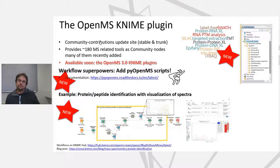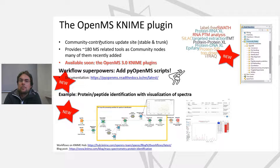In total we make about 180 tools available in the OpenMS KNIME plugin — some with larger tasks, some with smaller ones. It's available as a community contribution, both stable and trunk, and we soon plan to release the OpenMS 3.0 release including the 3.0 KNIME plugins.